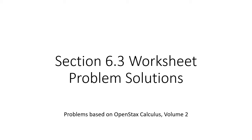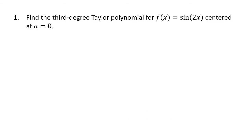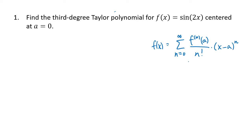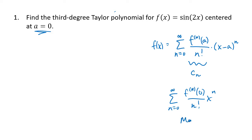This video contains solutions to sample problems from section 6.3 on Taylor and Maclaurin series. We're going to practice finding the Taylor polynomial for a given degree for a given function. The formula is that our function can be expressed as the sum from n=0 to infinity of the nth derivative of f evaluated at center a, divided by n factorial, multiplied by x minus a to the n. When centered at 0, this simplifies and is called a Maclaurin series, which is just a special kind of Taylor series.